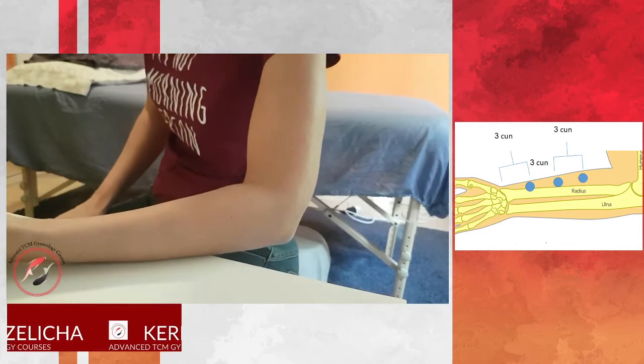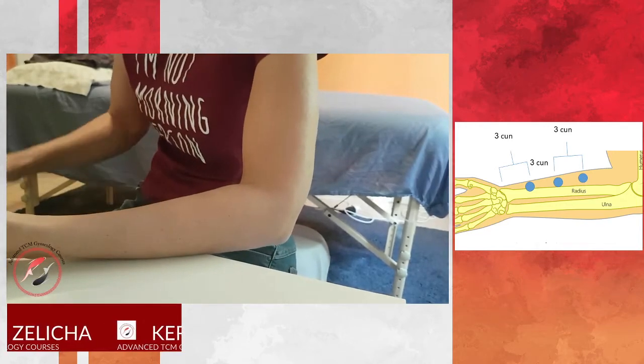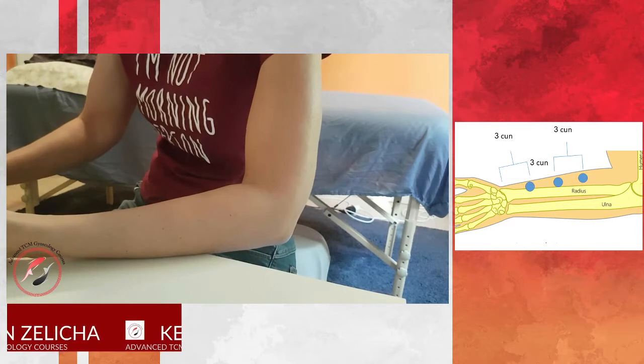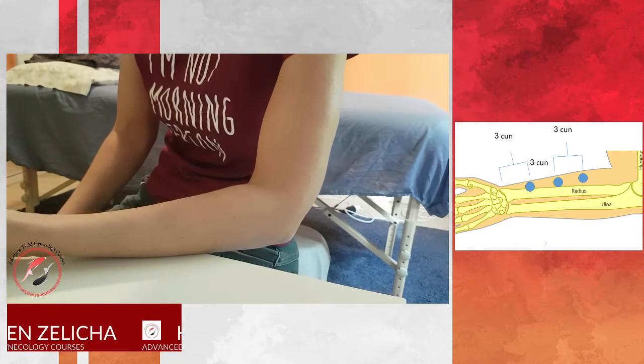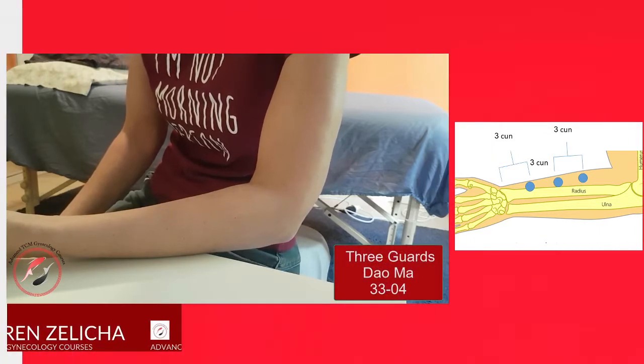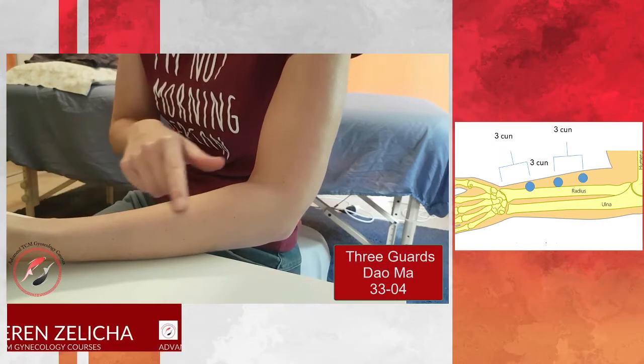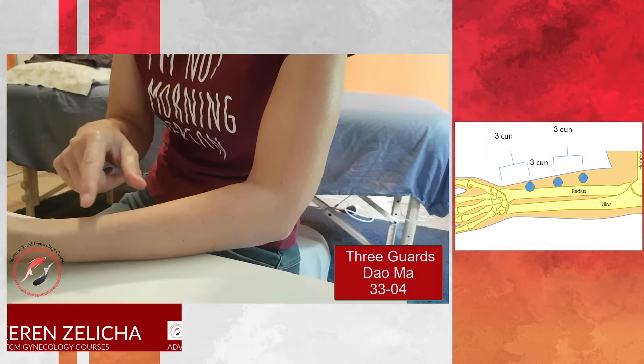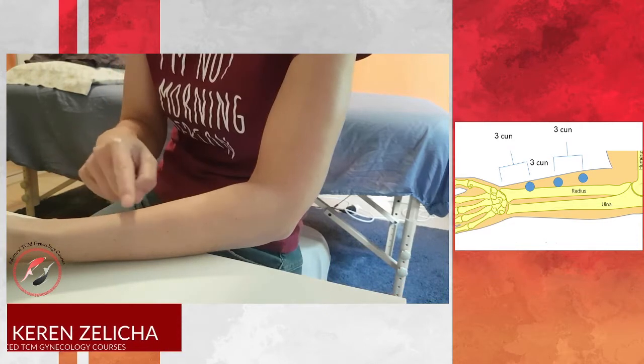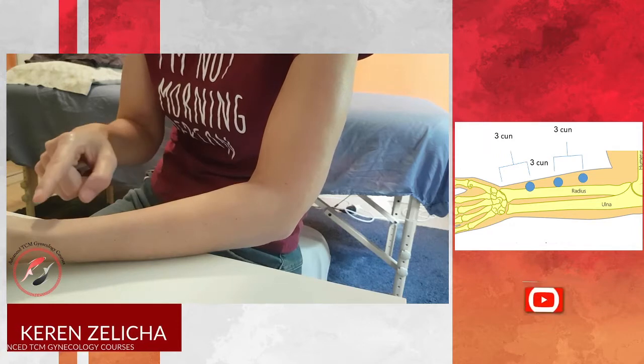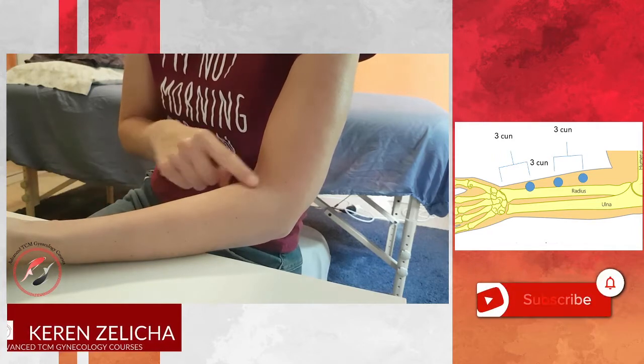Hi everybody. Today I would like to speak about the Dauma points 3304. 3304 are three points Dauma. Those three points are lying on the lung channel.